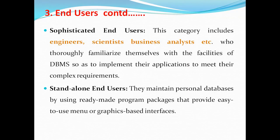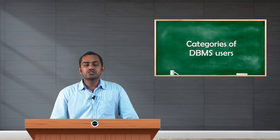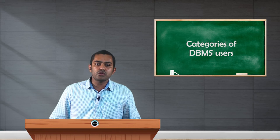The last end user category is standalone end users. For example, any person who has installed a database on their own system and accesses it for practice is a standalone end user. It may also be someone who created a database on their system for personal usage — in that case it becomes a standalone end user. So within end users we have casual, parametric, sophisticated, and standalone end users.